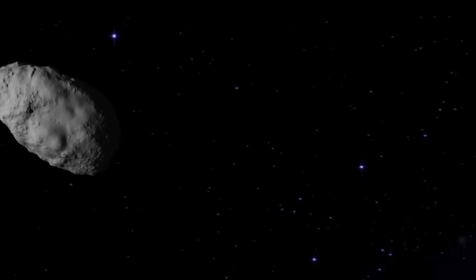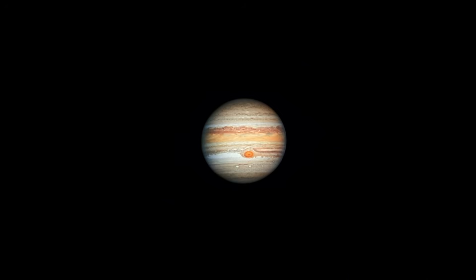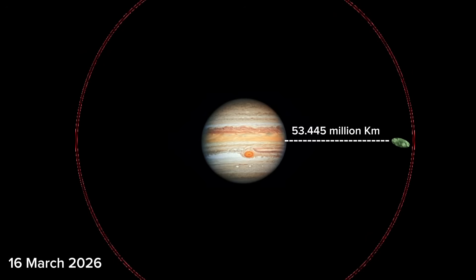According to Avi Loeb's calculations, on that specific date, 3i Atlas will pass at about 53.445 million kilometers from Jupiter. And that distance is almost exactly the same as Jupiter's hill radius, which he estimates to be 53.50 million kilometers.